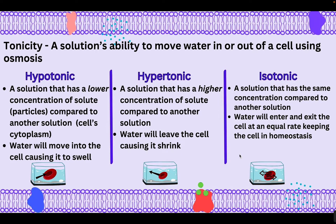Last but not least is our Goldilocks solution — this is called isotonic. It's a solution that has the same concentration compared to the cell's cytoplasm. In this case, water will be entering and exiting at an equal rate, keeping the cell in perfect balance, or in homeostasis. This is ideal for animal cells: since we don't have a cell wall, we don't want to be swelling to the point of bursting, and we don't want our cells to shrink from dehydration. The cell here is in the perfect environment where the water outside is at an equal concentration to the water inside the cell. That is the overview for the cell membrane and transportation of materials in and out of the cell.